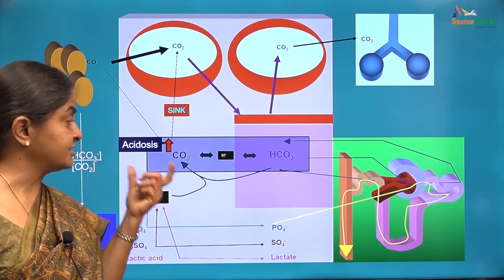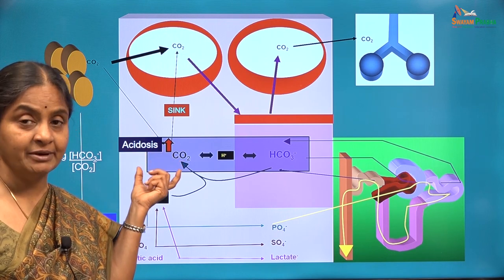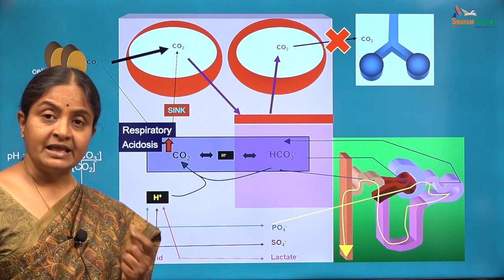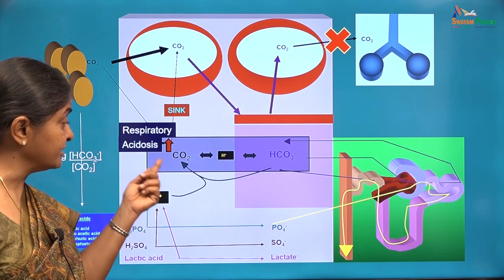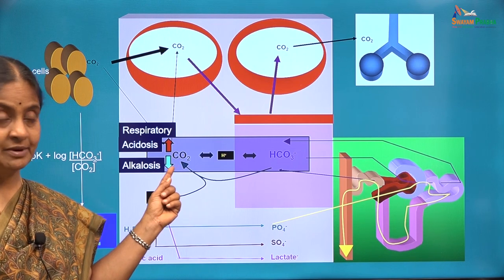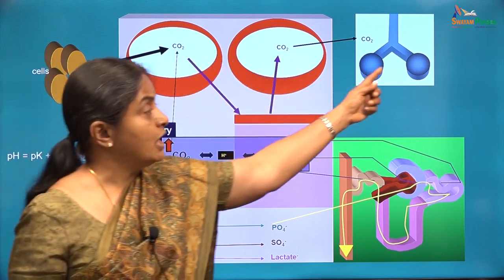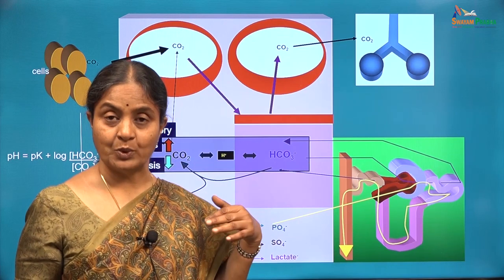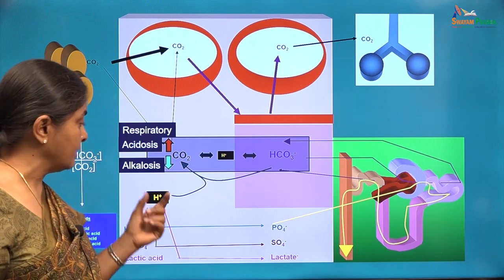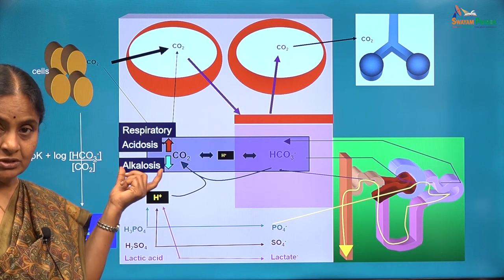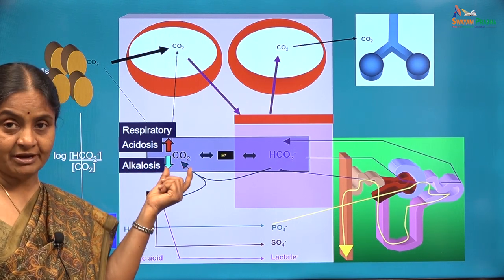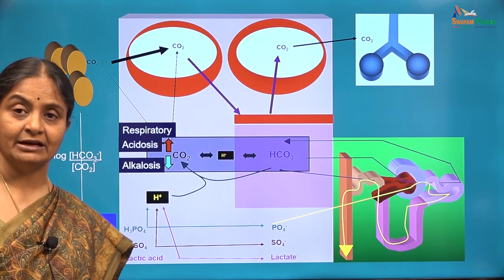Therefore, acidosis resulting from an increase in plasma carbon dioxide is termed respiratory acidosis. The same holds good for a reduction in carbon dioxide in plasma. Any reduction in carbon dioxide in arterial blood is only due to hyperventilation in the lungs, where the lungs are blowing away more carbon dioxide than is formed in the tissues. And therefore, alkalosis or an increase in plasma pH due to a reduction in plasma carbon dioxide is termed respiratory alkalosis.